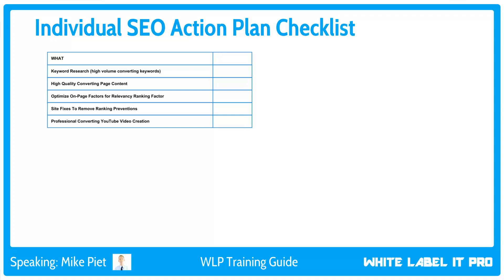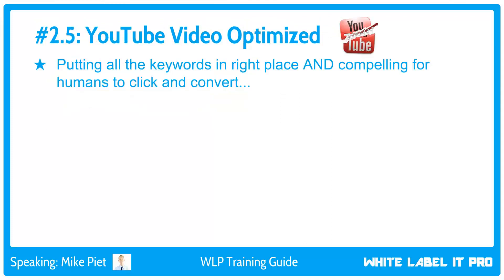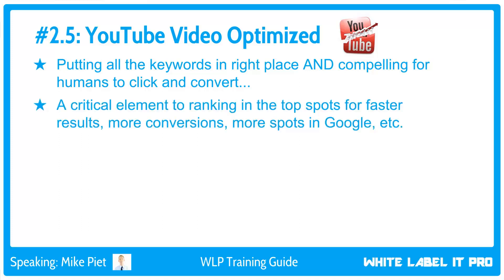The final piece of on-page optimization is YouTube video optimization. This means putting all the keywords in the right places — the video file, title, description, tags, etc. — to make sure Google and YouTube know the video is super relevant to the target keyword. Video optimization also means optimizing for the user: a compelling title that aligns with the video content so viewers aren't misled. Video optimization is 50% of the equation to rank in the top spots on YouTube and Google, and the other 50% is off-page promotion and backlinks.